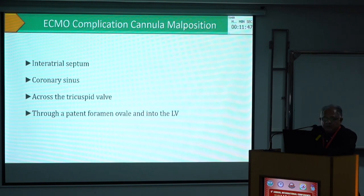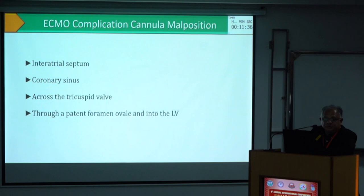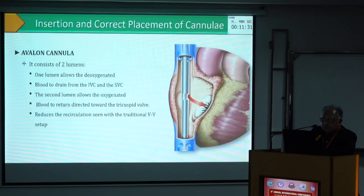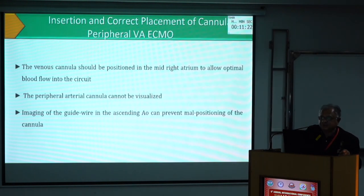What are the complications? The cannula may go into the wrong place. If there is a PFO, it will go through the interatrial septum. It may go into the pulmonary sinus or through the tricuspid valve. You have to make sure it is correctly positioned. The Avalon cannula requires careful positioning, and echo is necessary for looking at that positioning.